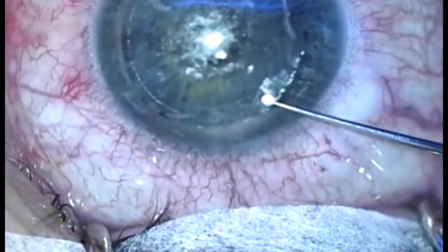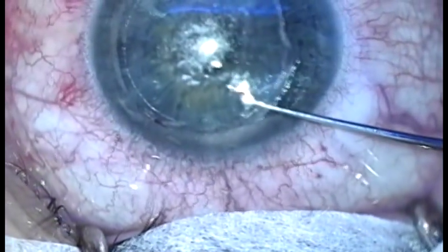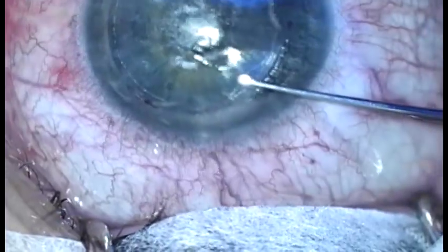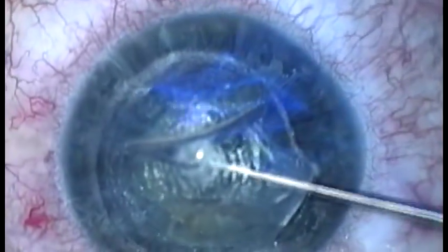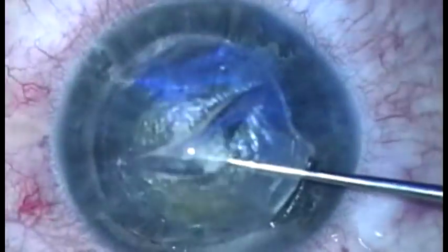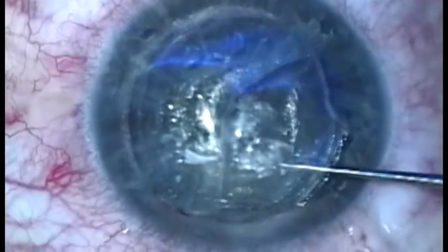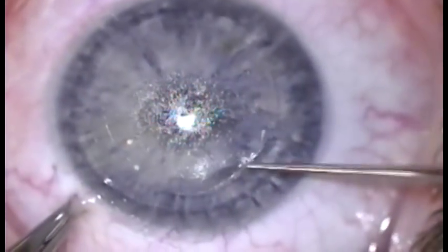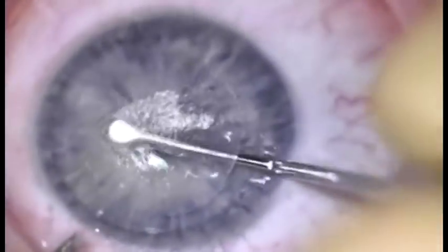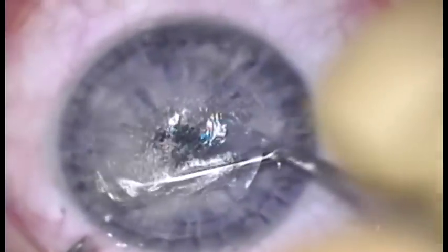If the lower interface is dissected first, the separation of the lenticule from the cap may be tough but it is straightforwardly accomplished by an inverted Sinskey hook that pulls the edge of the lenticule separating it from the cap. An upward maneuver with the hook may be used to fold the lenticule, opening space to allow the spatula to enter the upper interface to complete the separation.